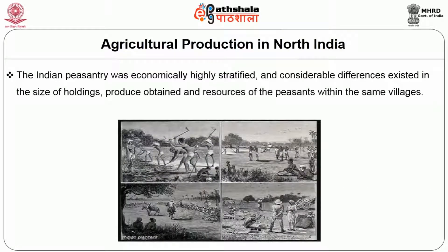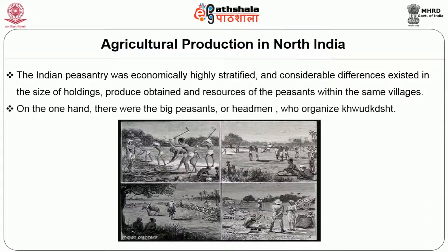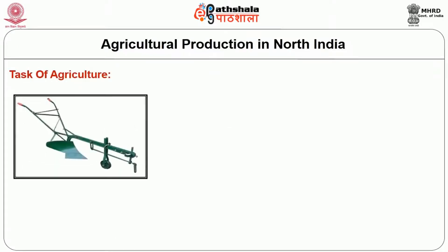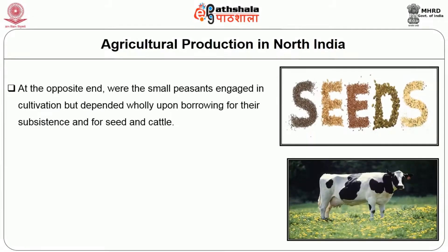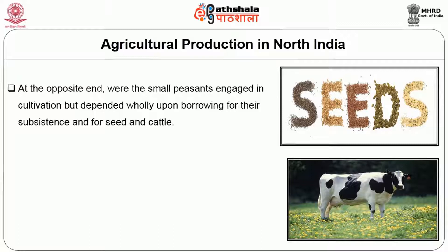Indian peasantry was economically highly stratified and considerable differences existed in the size of holdings, produce obtained, and resources within the same villages. On one hand, there were big peasants or headmen — Mukardams — who organized cultivation under their own management, employing laborers whom they paid fixed wages in cash or grain. At the opposite end were small peasants engaged in cultivation but wholly dependent on borrowing for their subsistence, seed, and cattle.